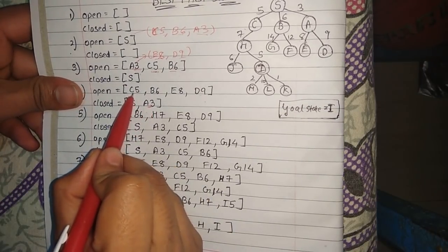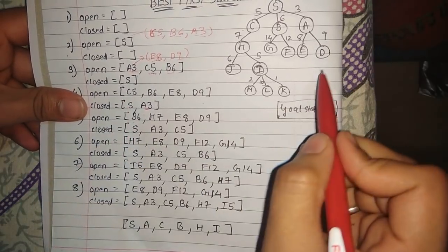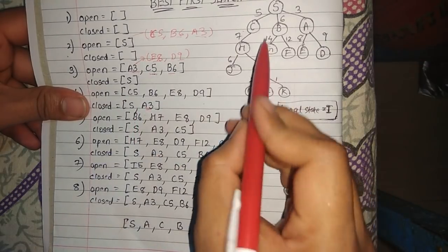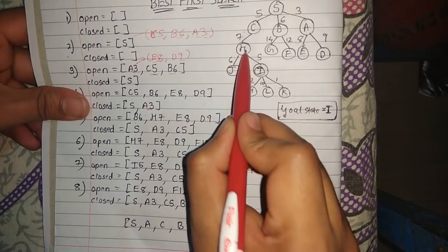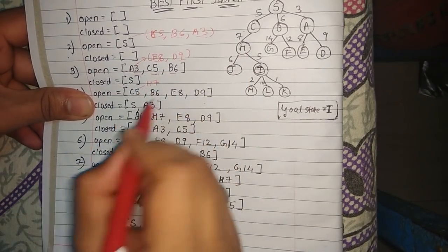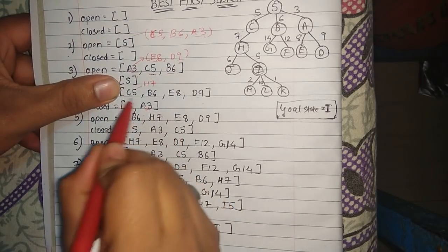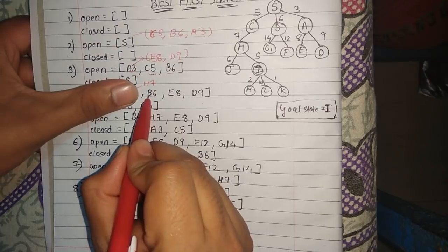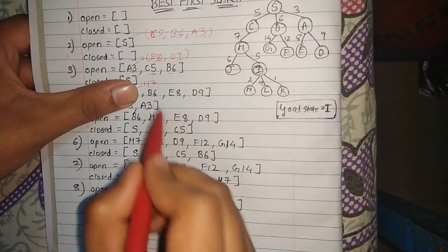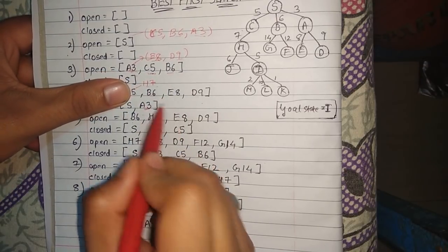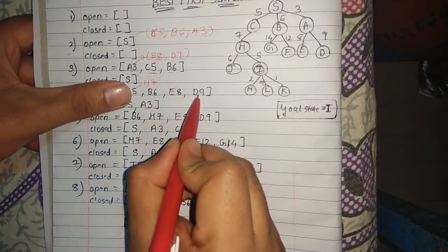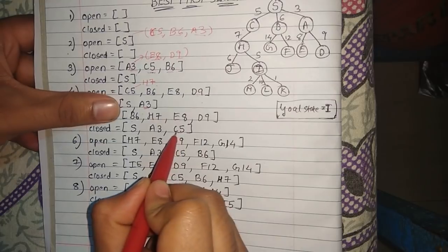Next is c5 — node c with heuristic value 5. C is not the goal state. The child of c is h with heuristic value 7. We place c into the closed array and sort the remaining open nodes: b6, h7, e8, d9.